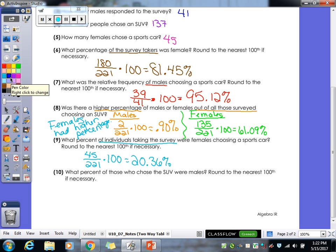And then our last one: what percent of those who chose the SUV were males, round to the nearest hundred? So how many people chose SUVs? 137. So this is out of 137 this time. So 2 divided by 137 and then times a hundred. 1.46%.